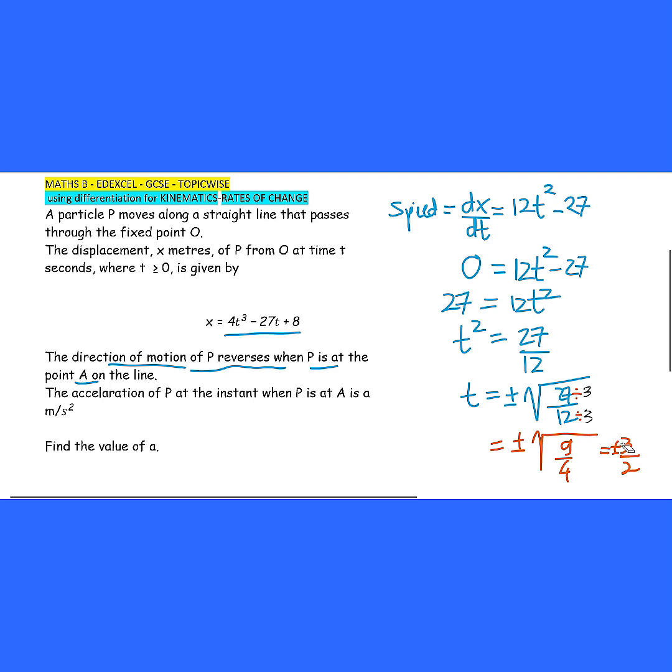So now, at the time t equals to 3 over 2 seconds is where the motion of P reverses. And the question is about acceleration of P at that point A. So at that point A, we have to take this time and put it into the acceleration.